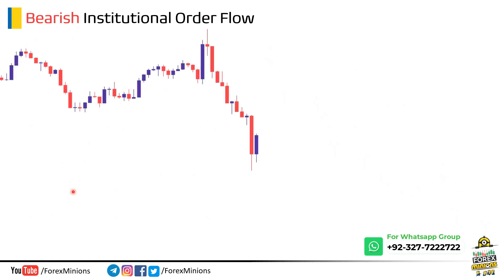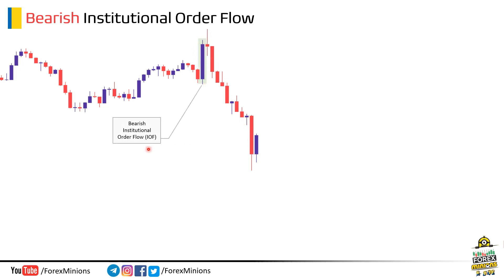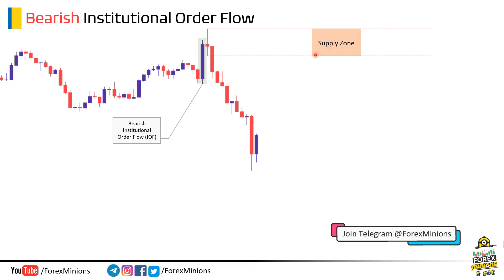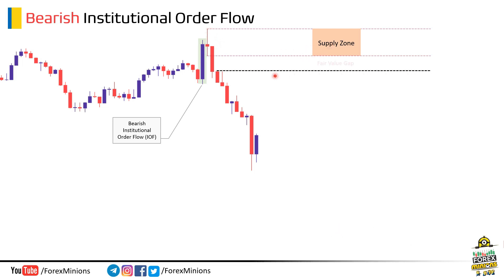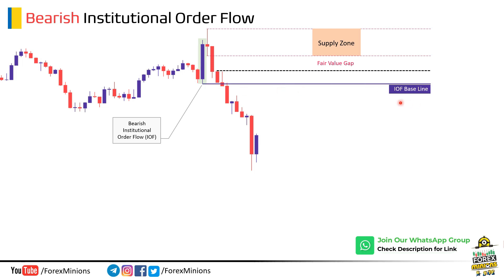Now let's understand the importance of order flow with a real market sample. This is an example of a bearish market. If you notice the highlighted area, this last buy move before the bearish move is actually a bearish order flow. As a supply and demand trader, retail traders will wait for this zone to execute their trades, and some traders will select this fair value gap zone. They will wait for price to come back to these zones and trigger their orders. But does it really happen sometimes? Answer is no. Sometimes market does not tap into these fair value gap zones and supply zones, because there is another level prior to these — which is actually institutional order flow.